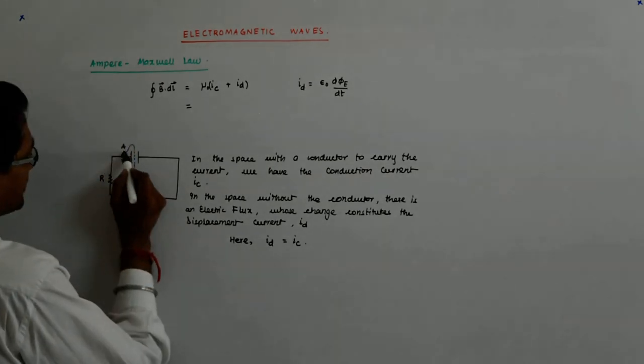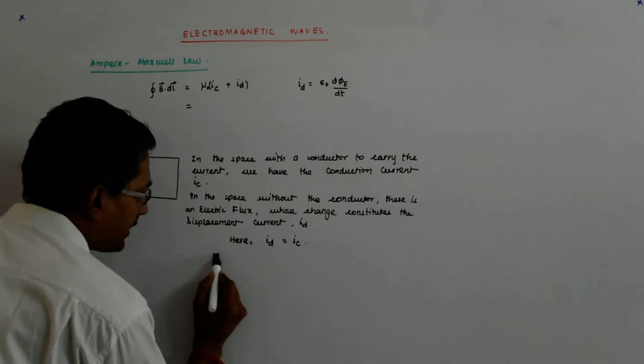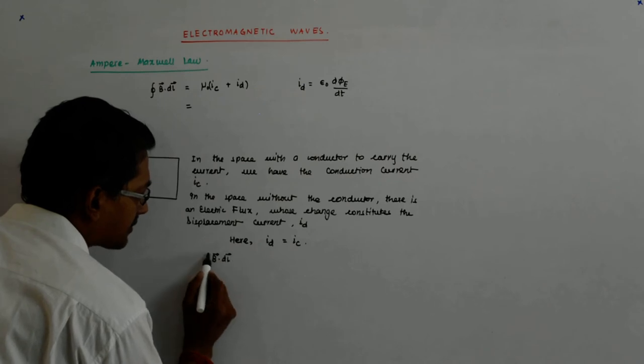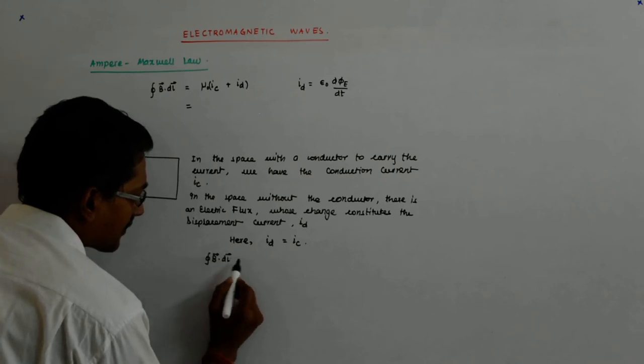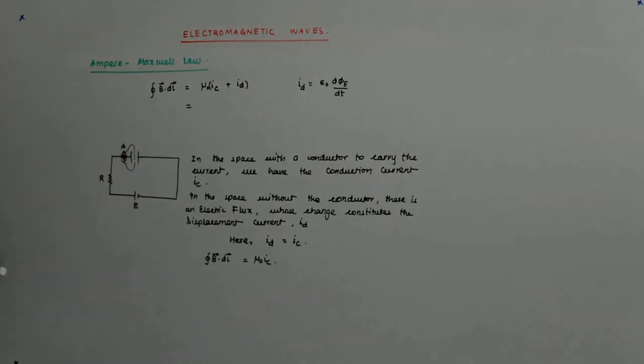So when we are considering this, the current that pierces this diaphragm, then we have B dot DL is equal to mu 0 IC.